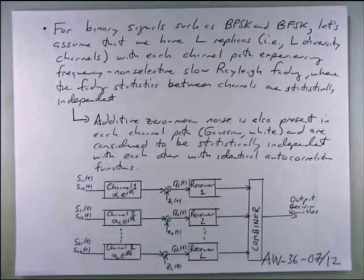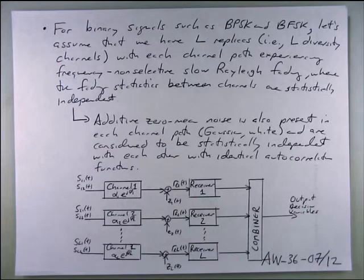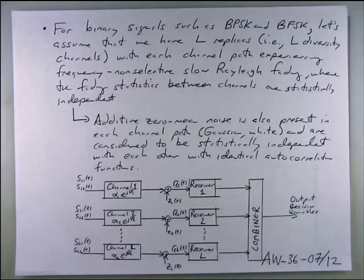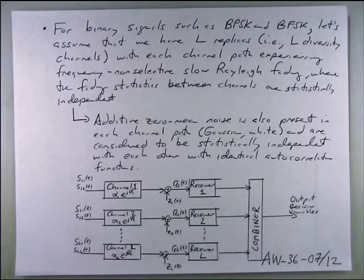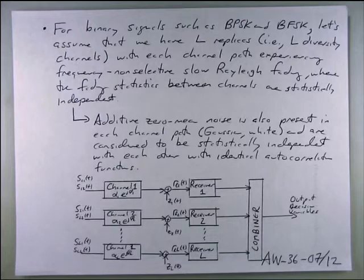For binary signaling — BPSK or BFSK — we have L replicas going through fading channels. Each copy experiences fading differently; they're Rayleigh random variables, so we don't know exactly how each copy will be attenuated. The more copies sent, the more insurance that at least one should be good. We can model the entire diversity scheme as propagating through independent uncorrelated channels, if designed correctly.